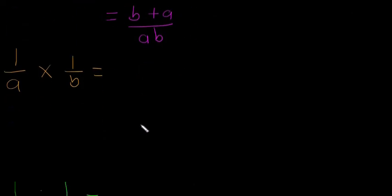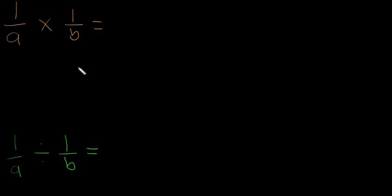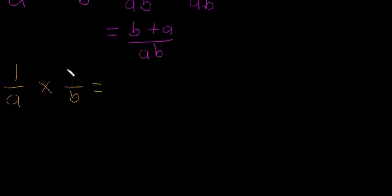Okay, and next one then. Again, multiplying fractions isn't any different. It's just the top by the top and the bottom by the bottom. So we're left with 1, because 1 times 1 is 1, over AB. So again, multiplying is still definitely the easiest one.